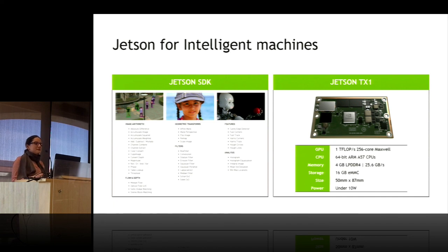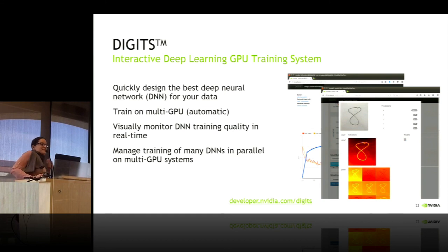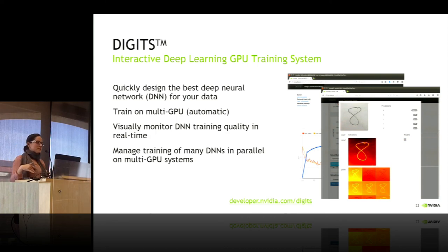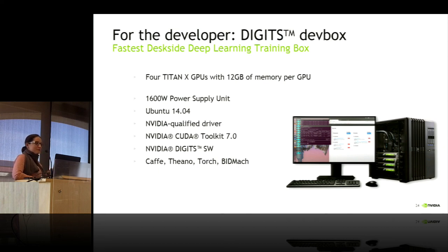This embedded part could be on a car or a drone — that's the intelligent machine version. It uses the same architecture as the M40 that goes in the data center. Digits is the GUI I've been talking about, letting people interact with the GPU without worrying about libraries or coding. We've also made that into an appliance: a workstation appliance showcasing both hardware and software stack, with the only constraints being a 1,600-watt power supply and fitting on a desk without too much noise or heat.